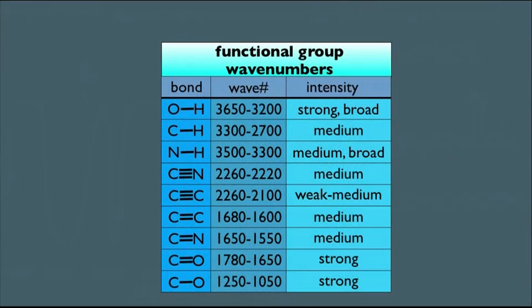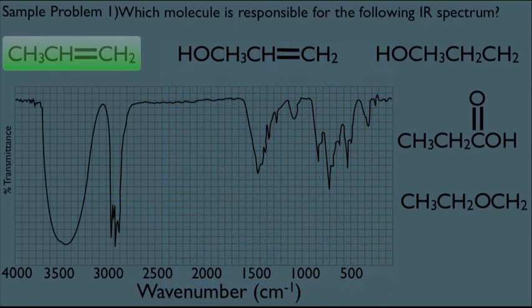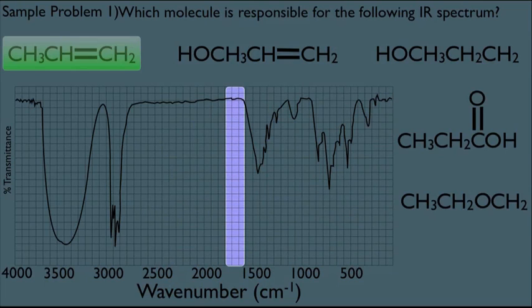Let's go back to our wavenumber chart here. Double bonds right here have a medium peak at roughly 1600 to 1680. So then we move to the IR spectrum and we look in that region right here. Notice there is no peak there, which means this can't be the structure for the IR. So this is what I mean by direction. You're starting with the molecule and then going into the IR, not vice versa.